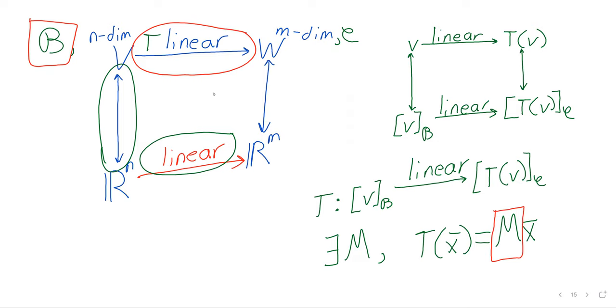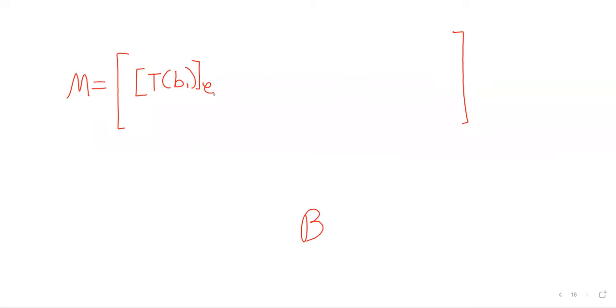we've already identified B as being the basis of V. So T of B. You could maybe intuit what B1 and so on are, but let's make this explicit.